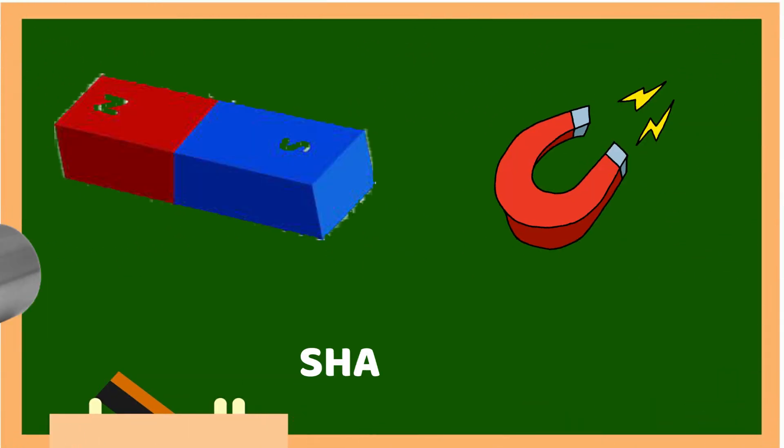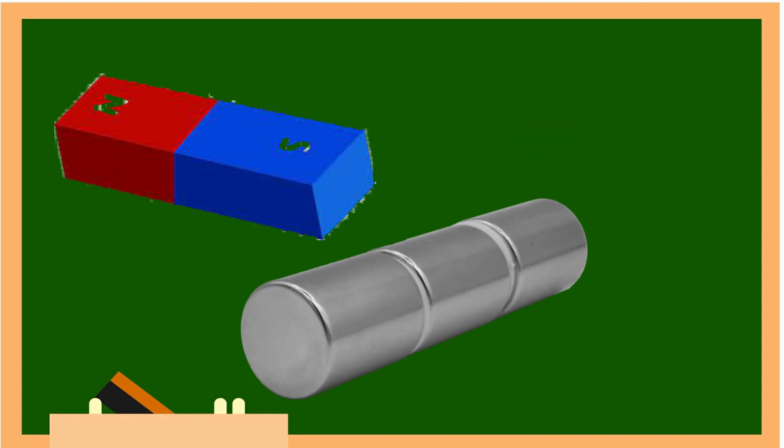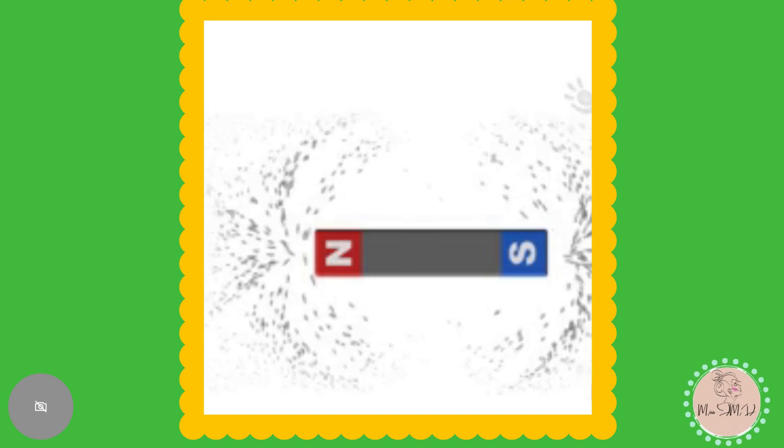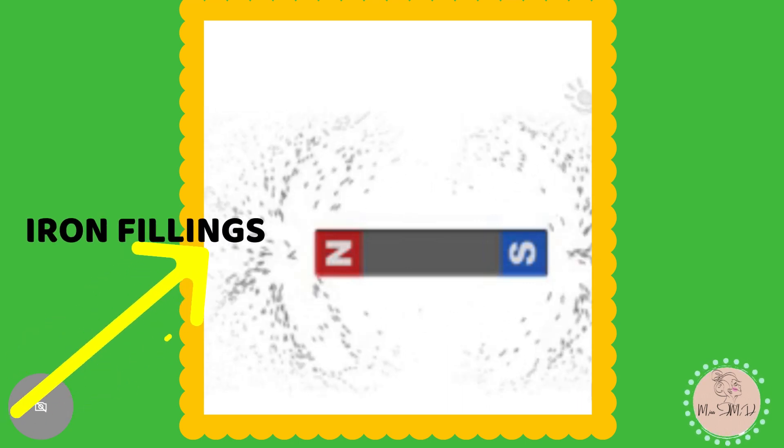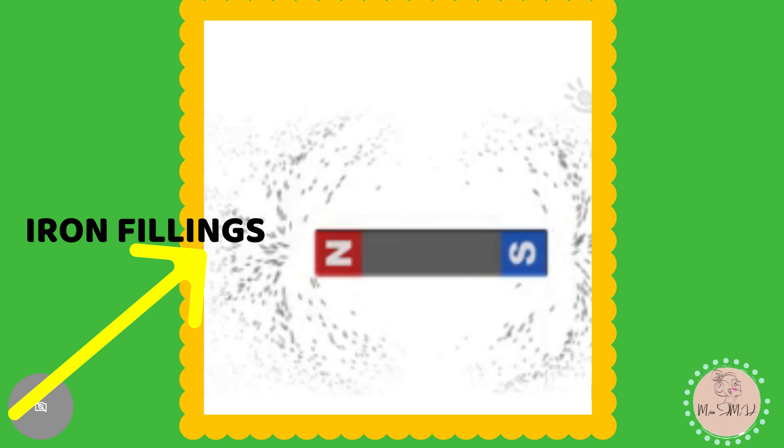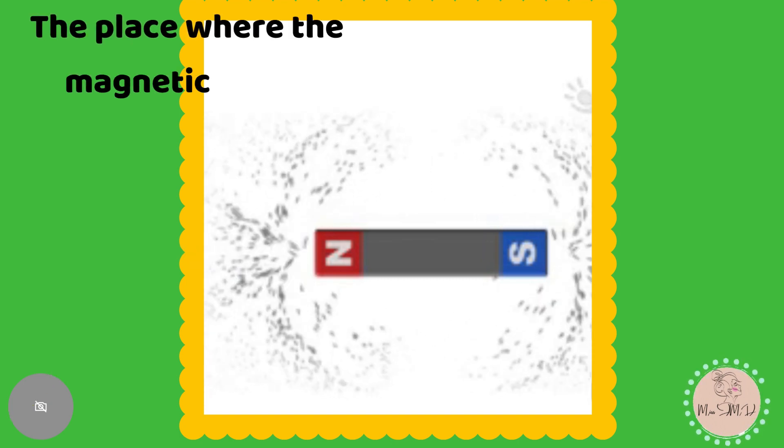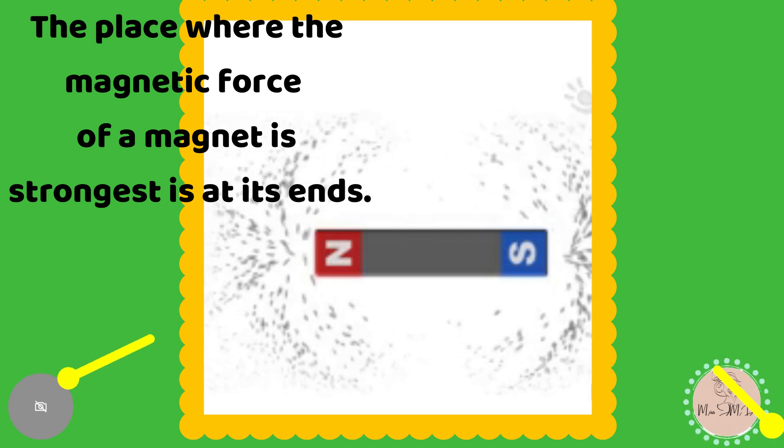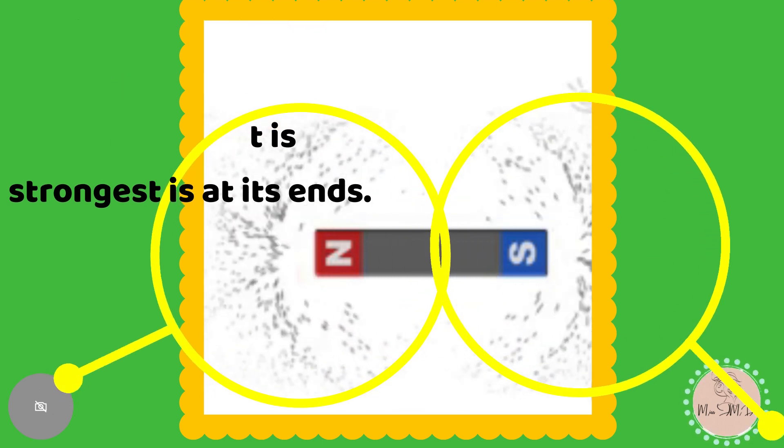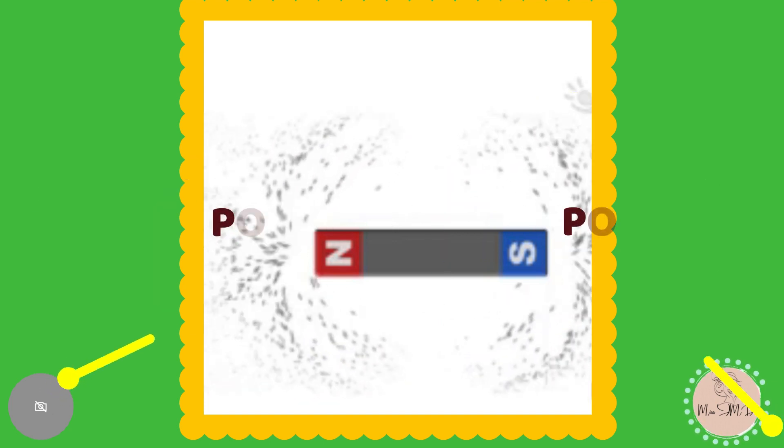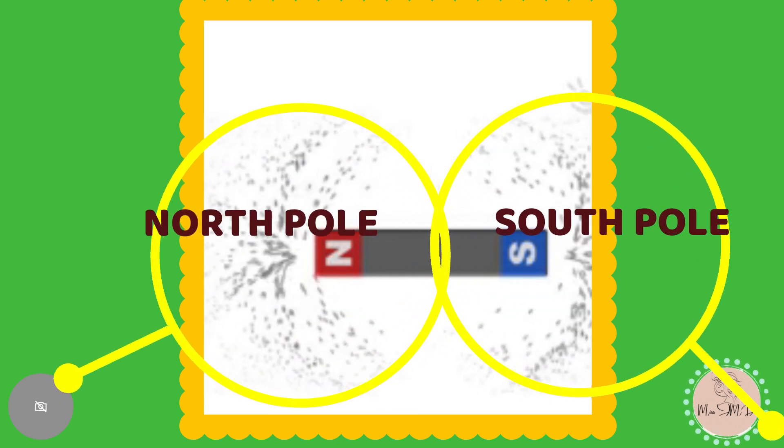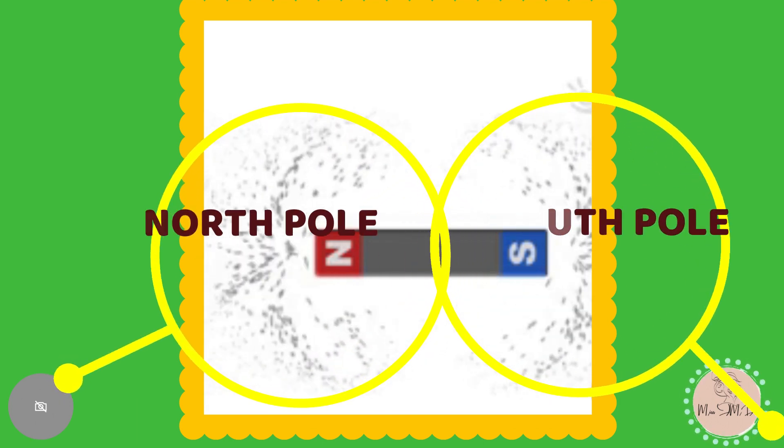Magnets may differ in sizes and shapes, but they all have the same properties. Look at this illustration. As you can see, most of the iron fillings stick to the magnet. The place where the magnetic force of a magnet is stronger is at its ends. These ends are what we call the poles. All magnets have two poles. N stands for north pole and S for south pole.